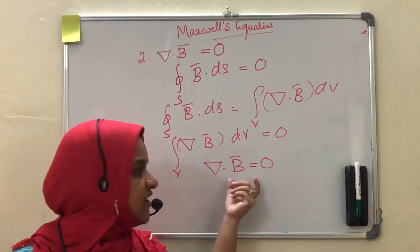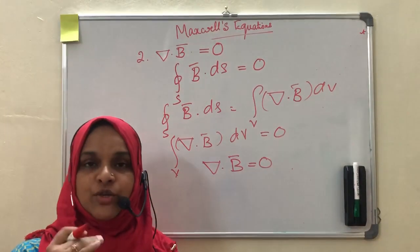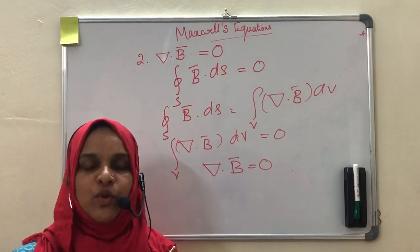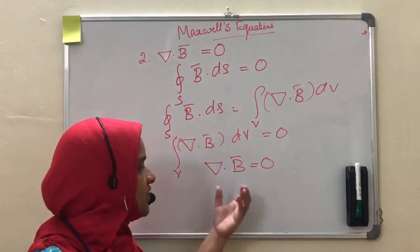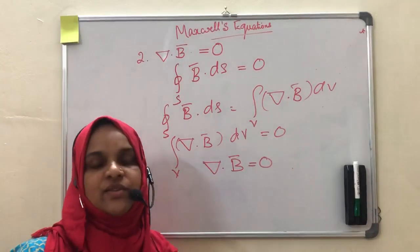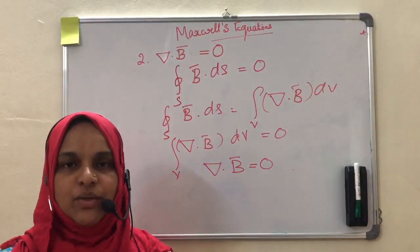That is why divergence of magnetic flux density is 0. This shows that magnetic monopoles do not exist, which can be proved from the second Maxwell's equation del dot B is equal to 0.